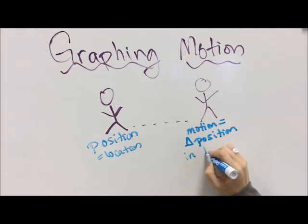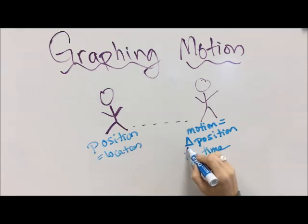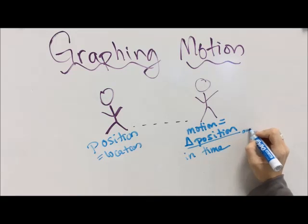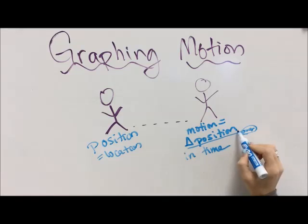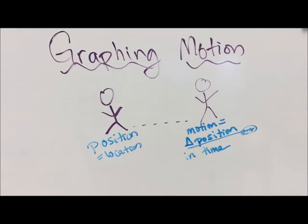Change in position happens in time. Time is always marching forward, so everything we do can be compared to time. Sometimes we'll write this as a change in position over time. We're going to get to how that all works out with our next video about calculating the speed of our motion.